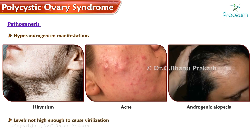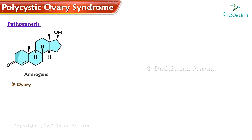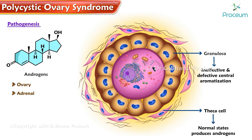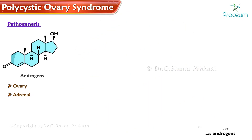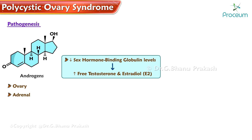Androgen levels are not high enough to cause virilization. These androgens are produced mainly from the ovary and also from the adrenal. Granulosa shows ineffective aromatization and defective central aromatization, while theca cells in normal states produce androgens. These released androgens decrease sex hormone binding globulin levels. A decrease in sex hormone binding globulin increases free testosterone and estradiol (E2).